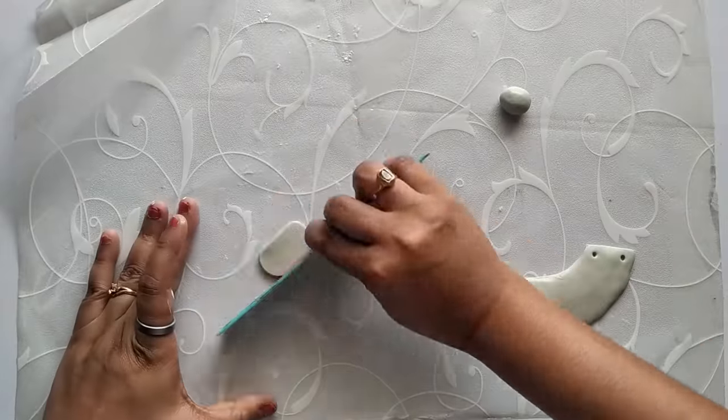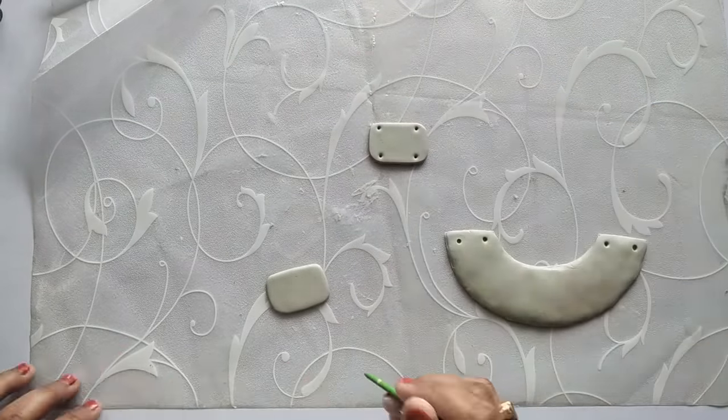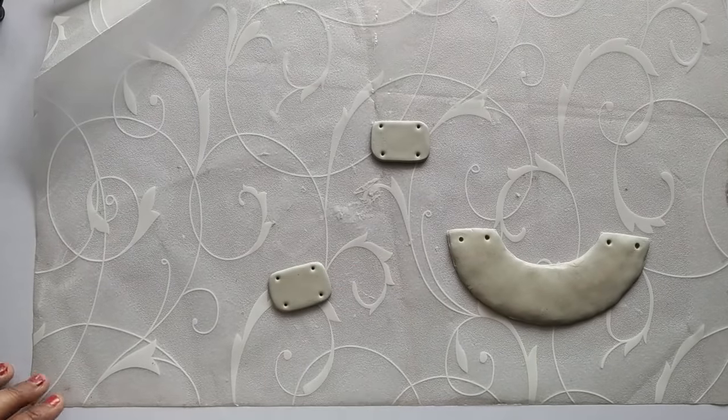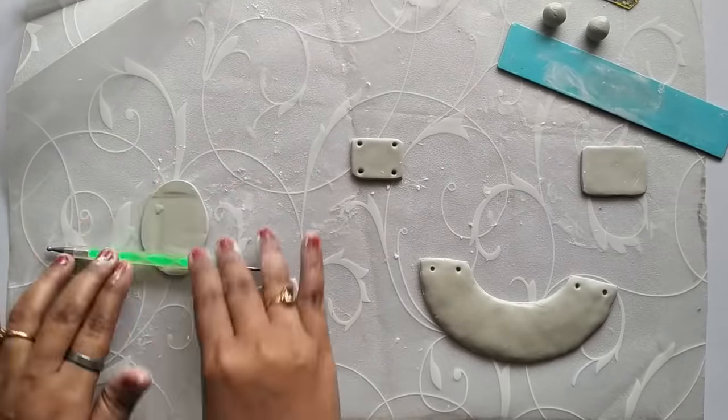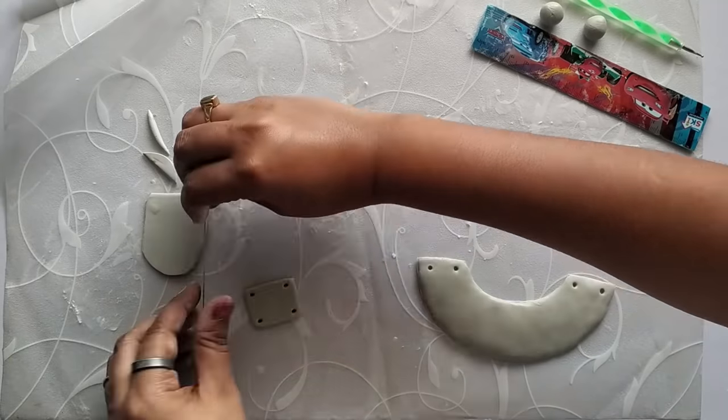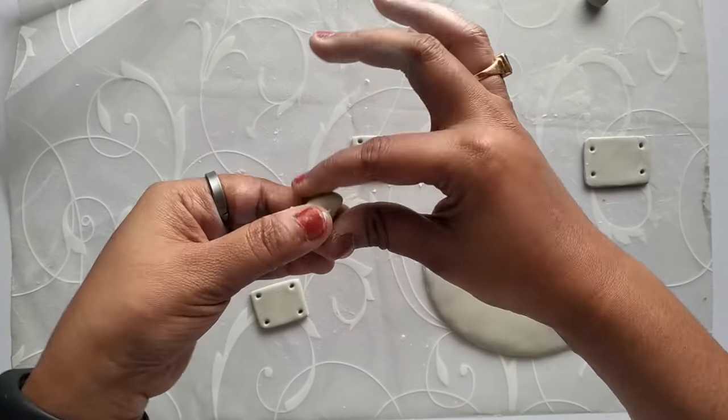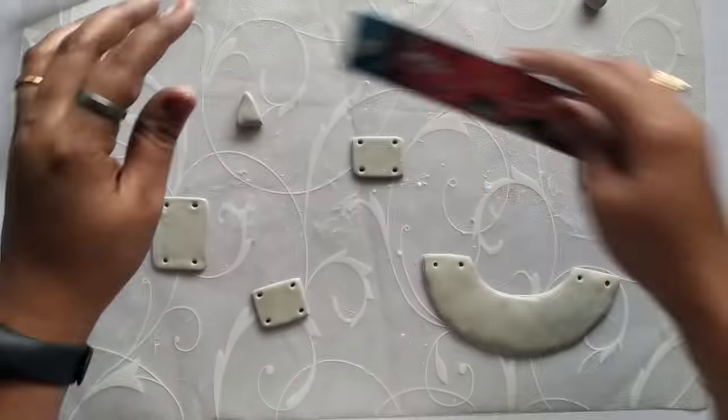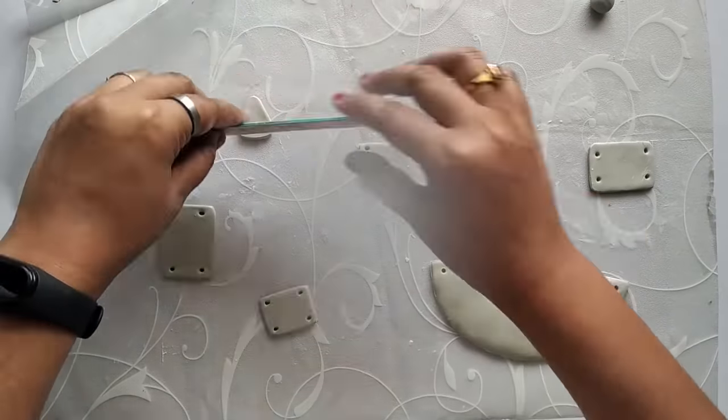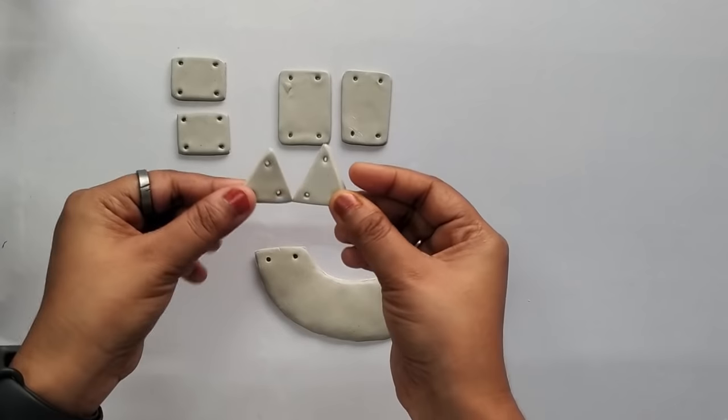Now taking another piece of clay and creating a rectangular shape, making four small holes on the rectangular piece with the same brush and using different techniques to create two more rectangular pieces. Taking another piece of clay, making a cone kind of shape, pressing using a scale to flatten and then giving it a triangular shape. All the pieces are dried up now and ready for painting.